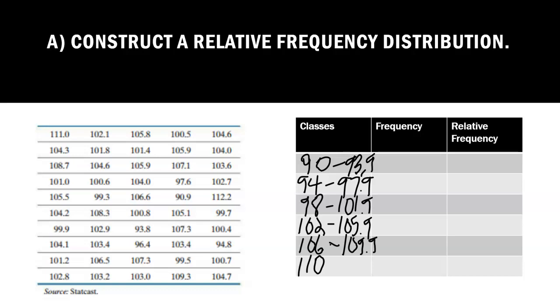This one would be 109.9. If we had another class, the lower limit would be 114, so this one would stop at 113.9 because the next class would start at 114. Now we have to find the frequency of each of those.